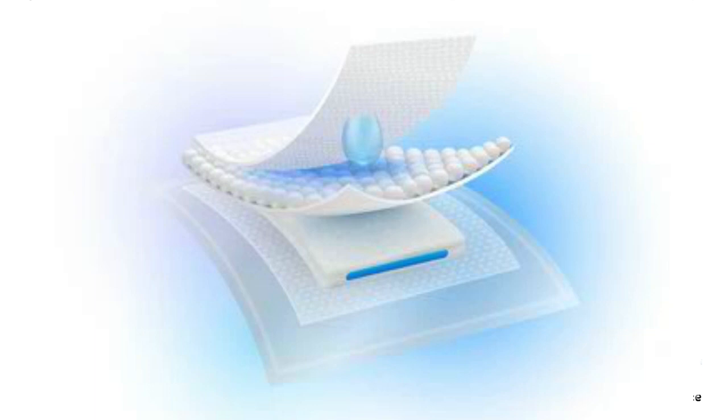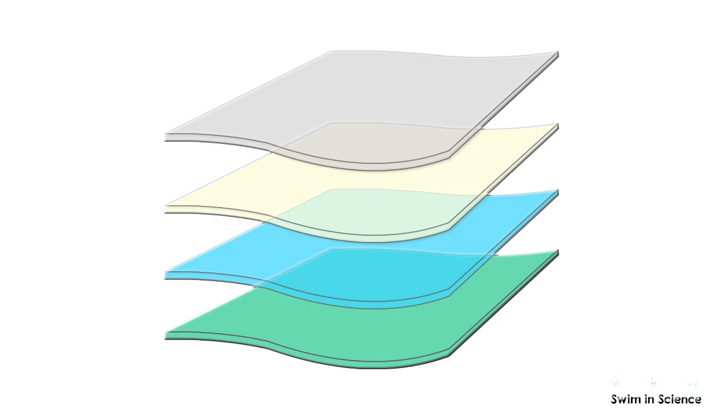Modern disposable diapers are made up of safe inert polymers. Basically, a disposable diaper consists of four functional layers.